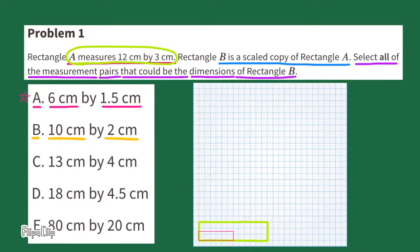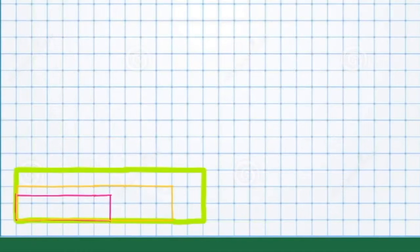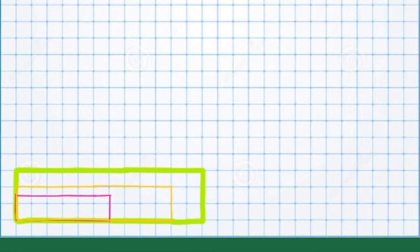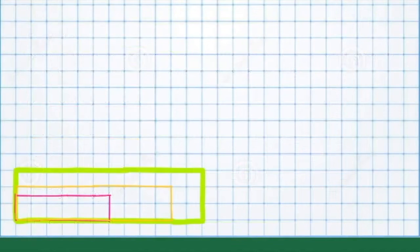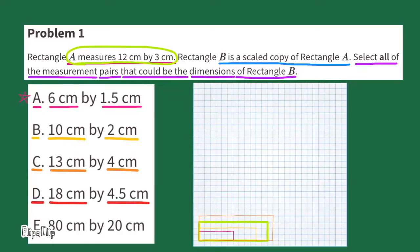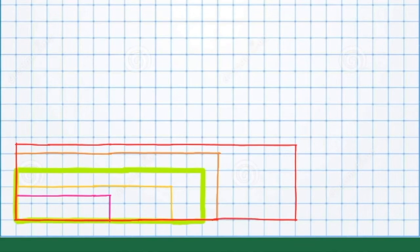Next, I'll draw the rectangle that's 10 cm by 2 cm. Without doing any math, this just doesn't look like it's going to be a scaled copy of Rectangle A. I'll come back to it later to double check. Next, I'll draw the rectangle that's 13 cm by 4 cm, and I'll come back to this one too. Now I'll draw the rectangle with dimensions 18 cm by 4 and 5 tenths centimeters. This one looks like it could be a scaled drawing of Rectangle A, but I'll check it later.